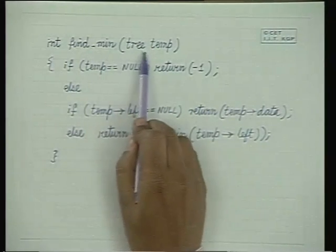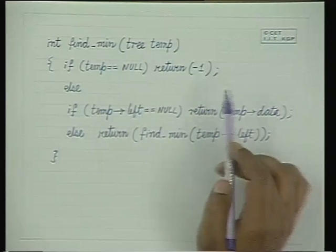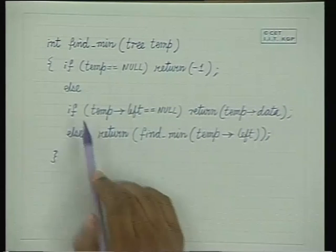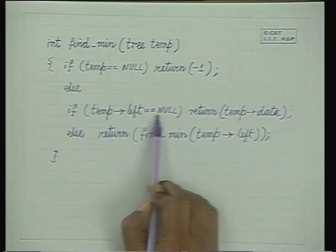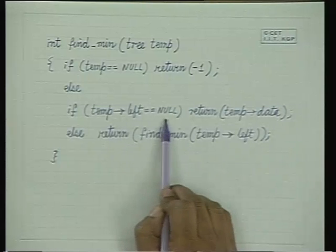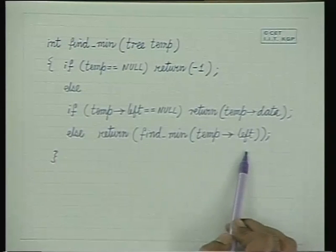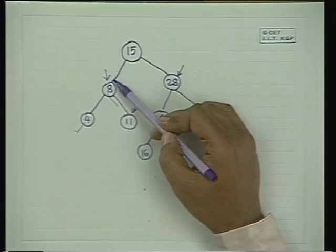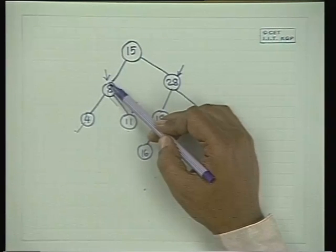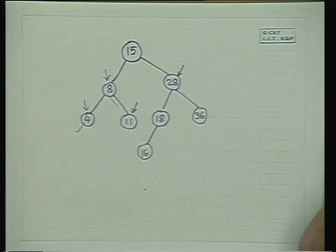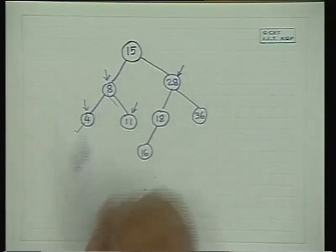The function to find the minimum works like this: find_min takes a pointer temp. If temp equals null, return -1 — no element exists. Else if temp->left equals null, return temp->data — this is the minimum. Otherwise, recursively call find_min on temp->left. You keep moving left until temp->left is null, then return that node's data. For maximum, the same logic applies going right.